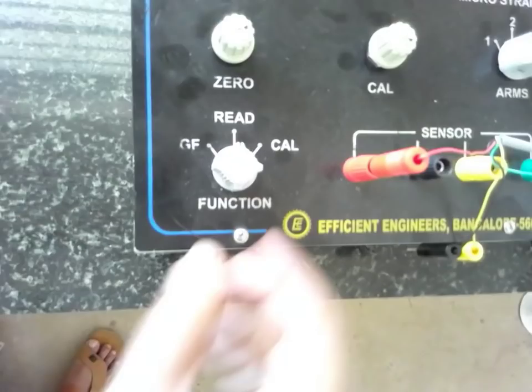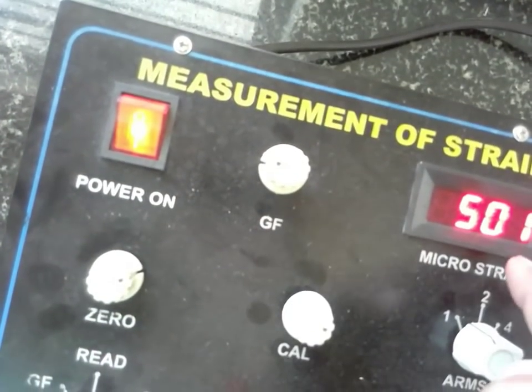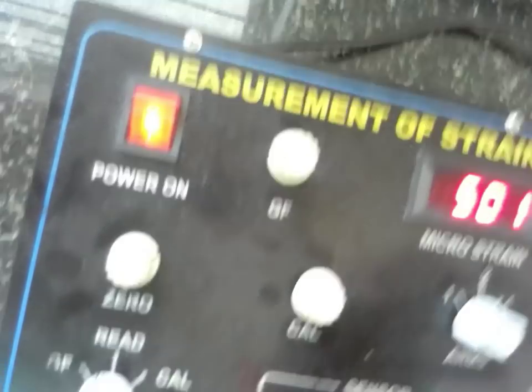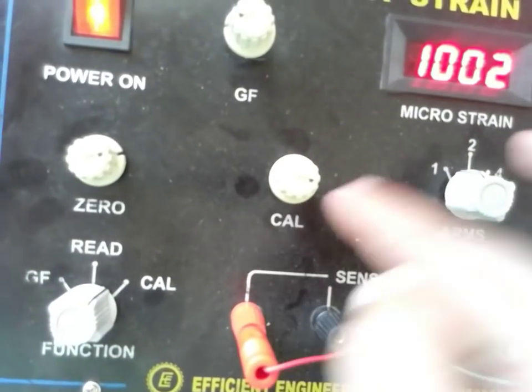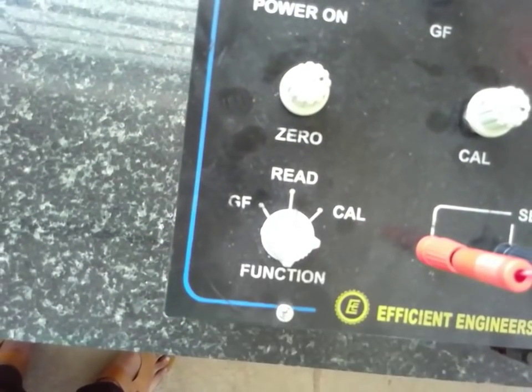Now again with the GF knob, you have to make GF as 500. With the help of this one you have to make it as 500. Next, the cal knob, it should be one thousand. If it is not one thousand, with the help of this knob make it as one thousand. And bring back this to read knob.